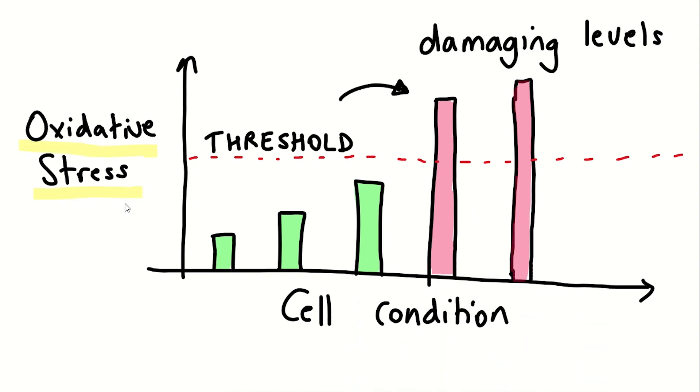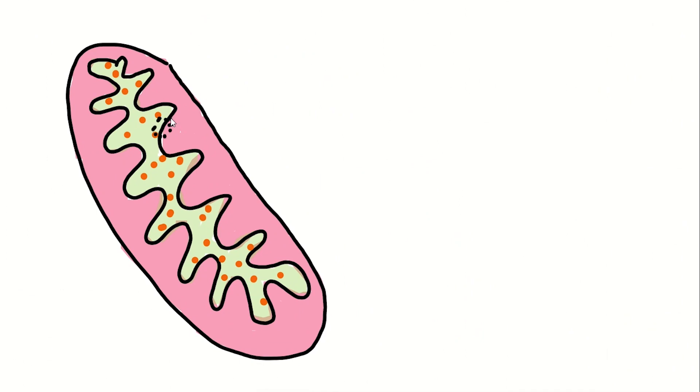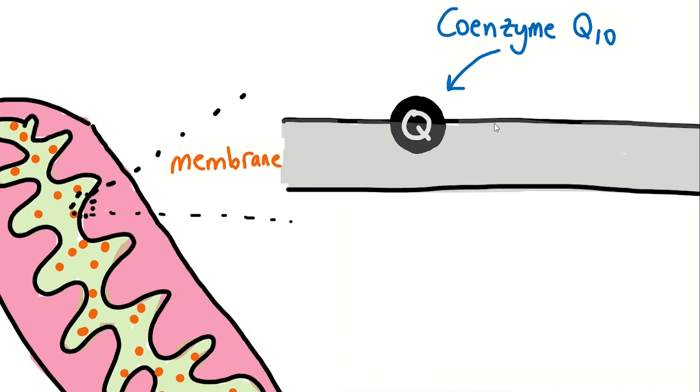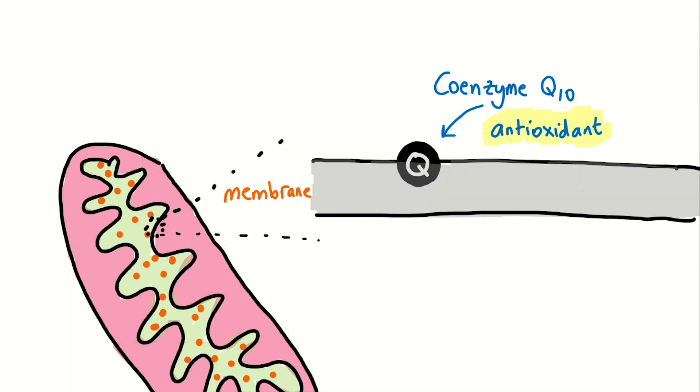Coenzyme Q10 is a natural antioxidant found in the inner mitochondrial membrane, where it aids in energy production and neutralisation of reactive oxygen species. Less coenzyme Q10 is made as you age.